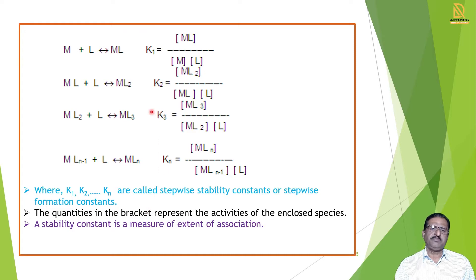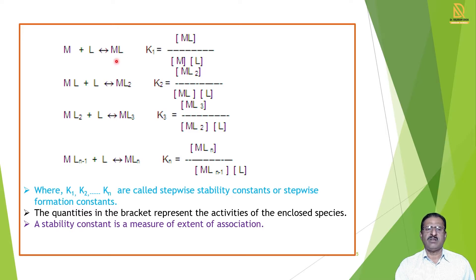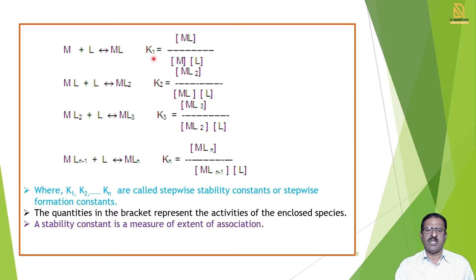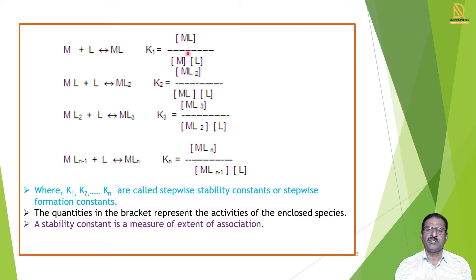First, we take one metal and add one ligand. Metal + L gives the product ML. When one metal combines with one ligand, there is formation of product ML. For this first reaction, we write the stability constant K₁. So K₁ = [ML] / ([M][L]). This is the first stability constant.